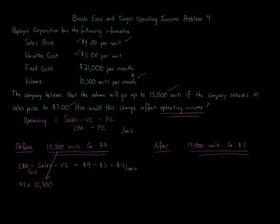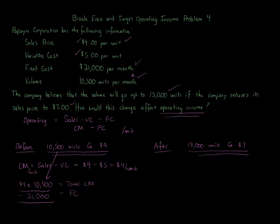That gives us our total contribution margin. We then subtract the fixed cost, which is given to us as $21,000 per month. So: 10,500 × $4 = $42,000 total contribution margin, minus $21,000 fixed costs, gives us an operating income of $21,000 in the before situation.